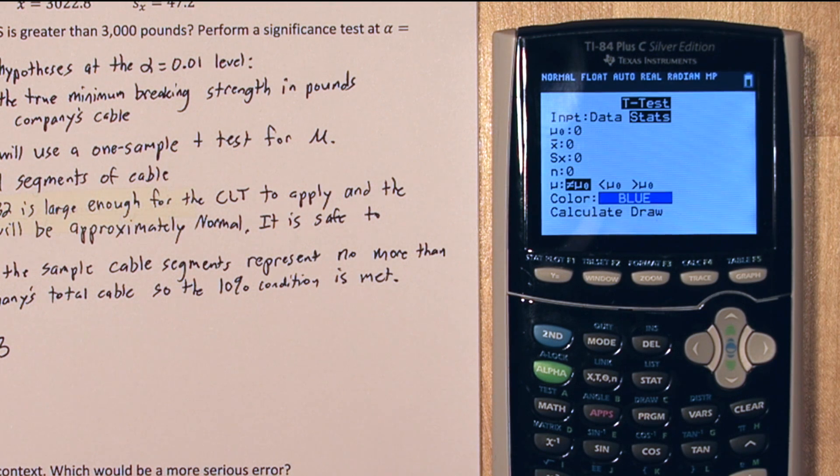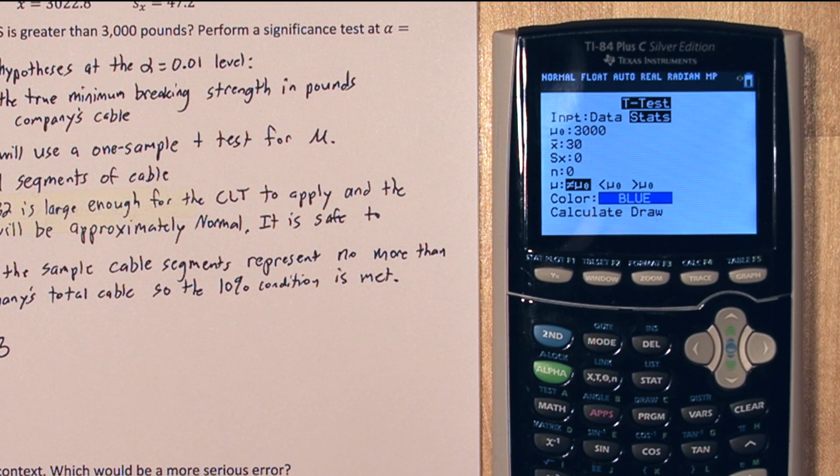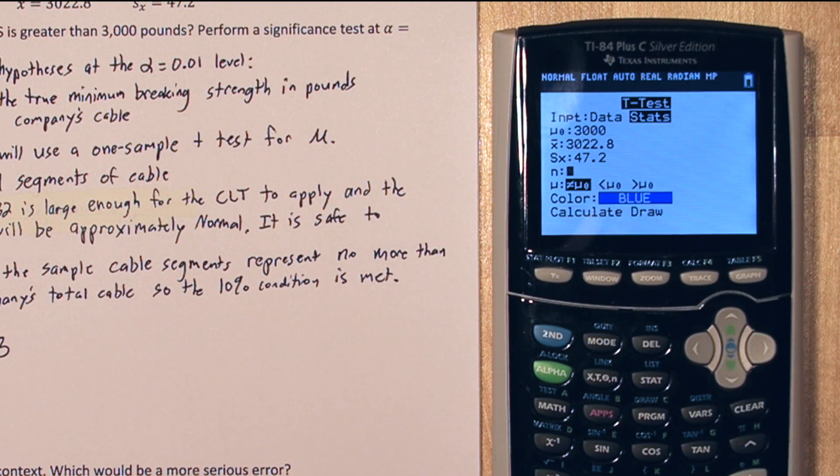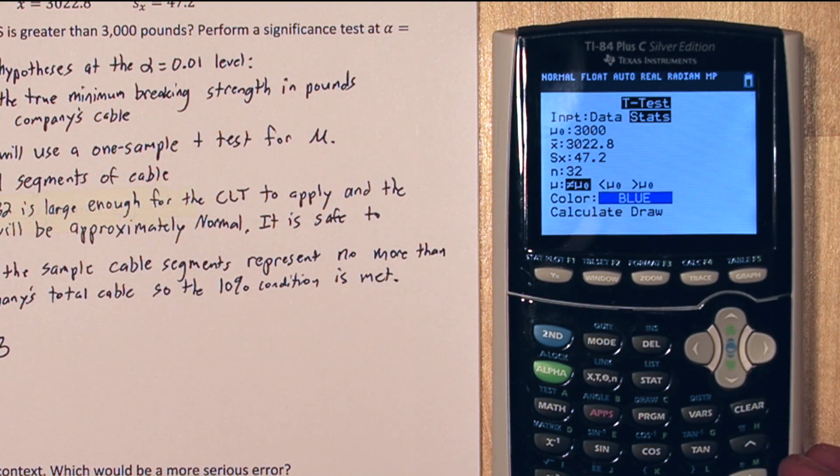Now the mean in our null hypothesis is 3000, and our sample mean is 3022.8, and our sample standard deviation is 47.2, and our sample size is 32. And our alternative hypothesis is that mu is greater than 3000.